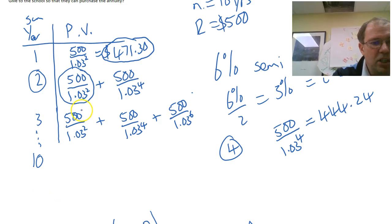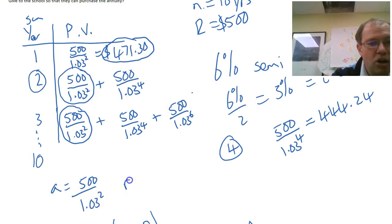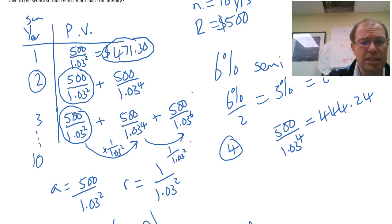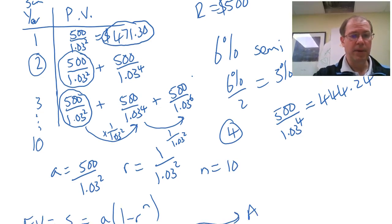Our first term of our geometric series is 500 over 1.03 squared. Our common ratio is not 500 over 1.03 squared, I apologize. It's 1 over 1.03 squared. To get from one term to the next term, you multiply by 1 over 1.03 squared. To get from this to this one, you multiply by 1 over 1.03 squared. So our common ratio is that and our number of terms is 10.